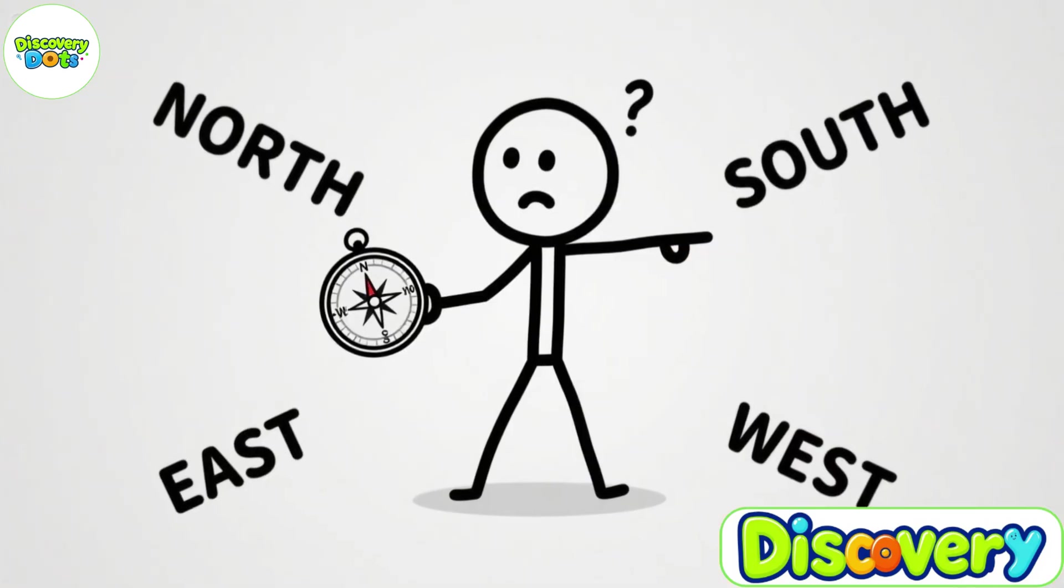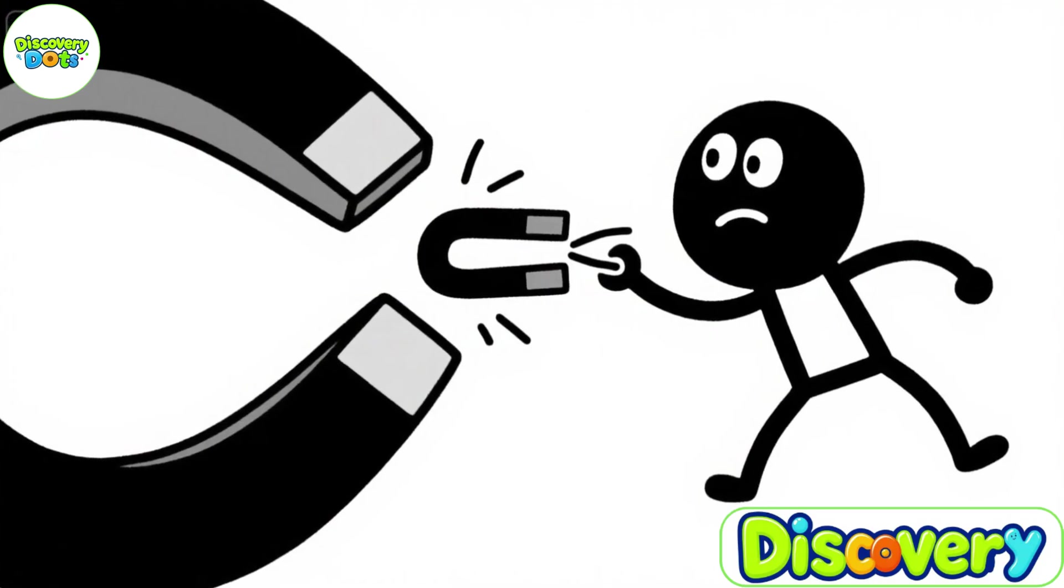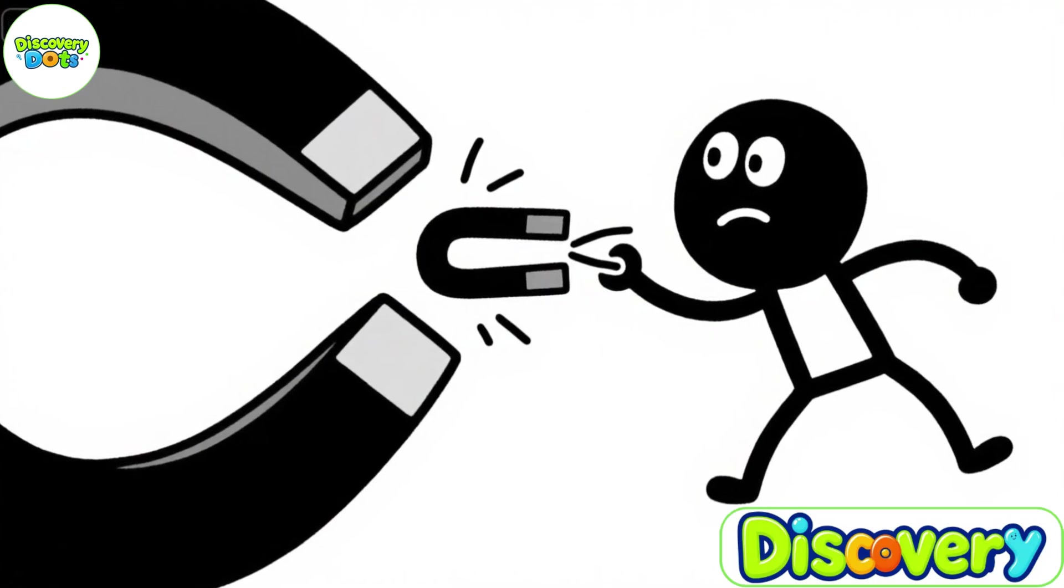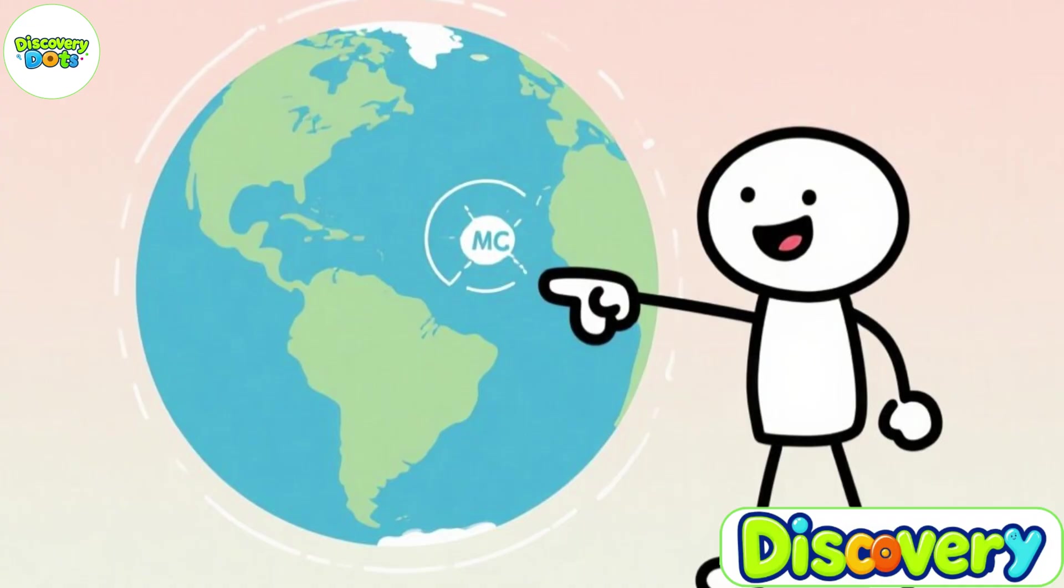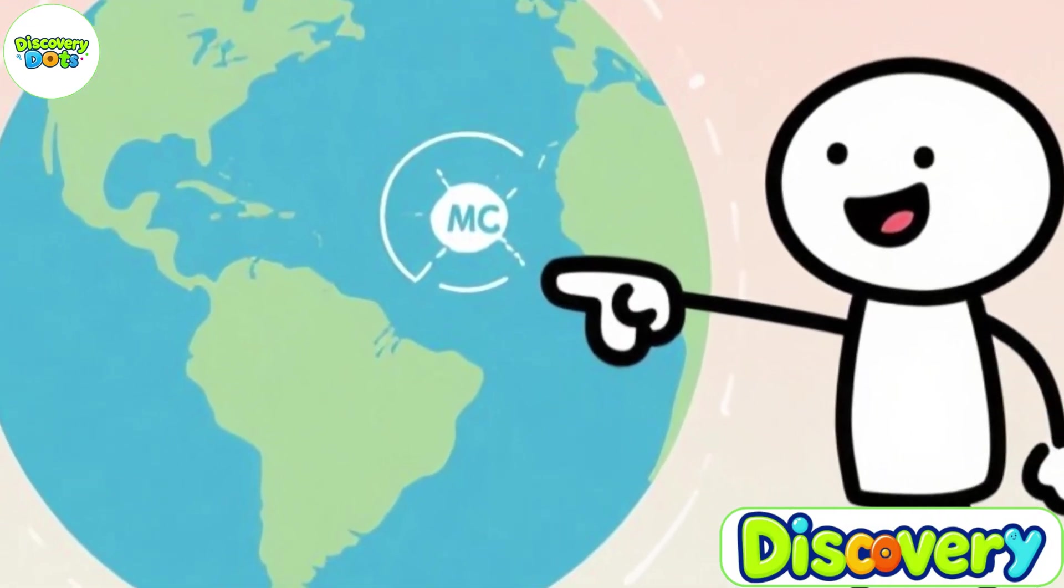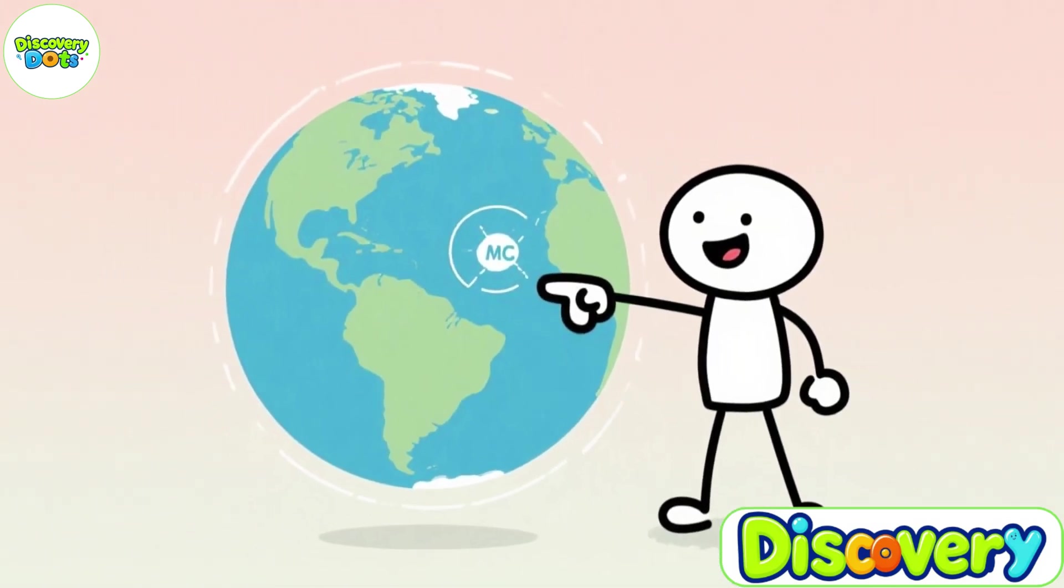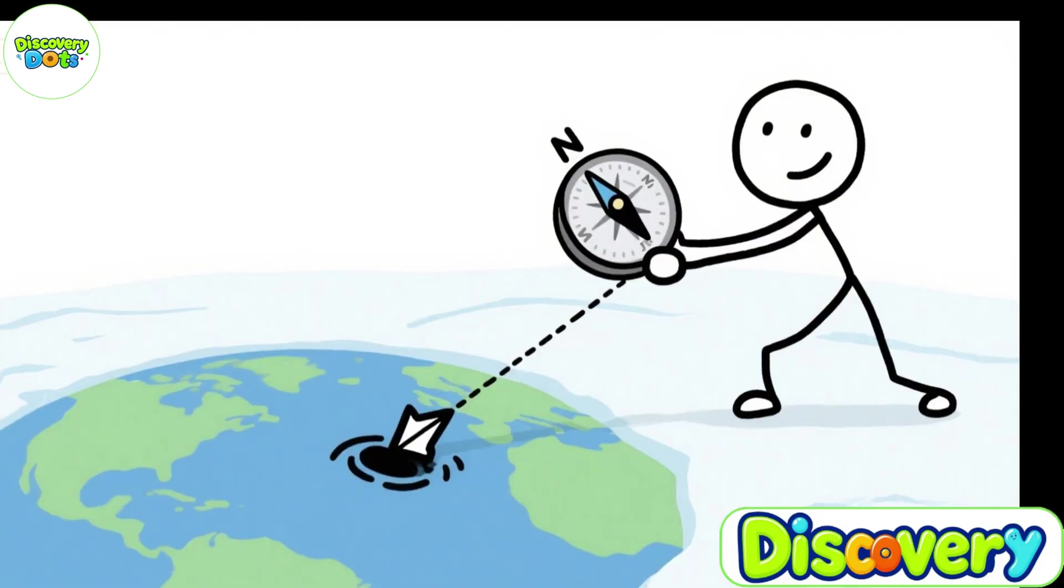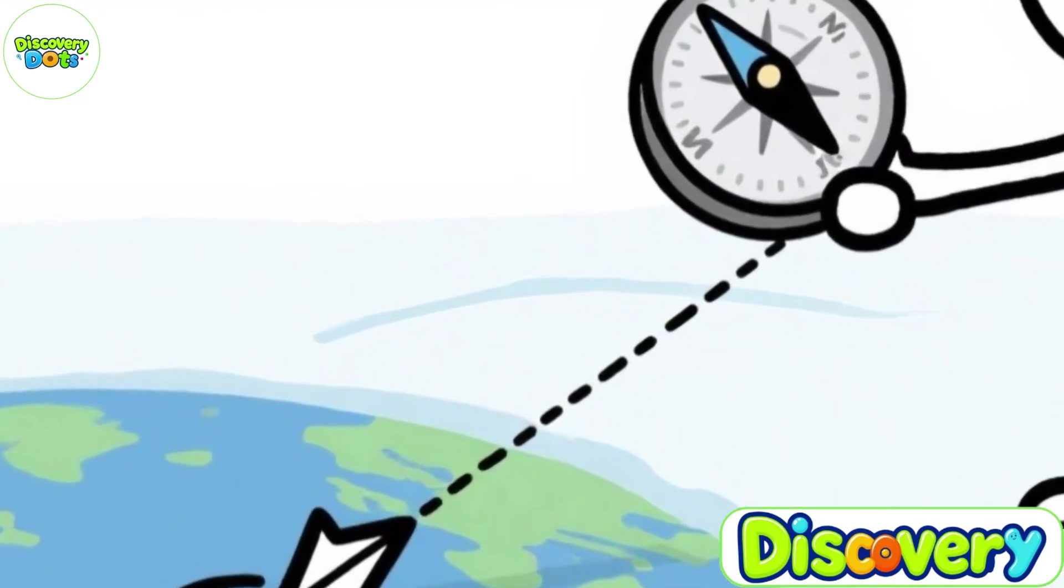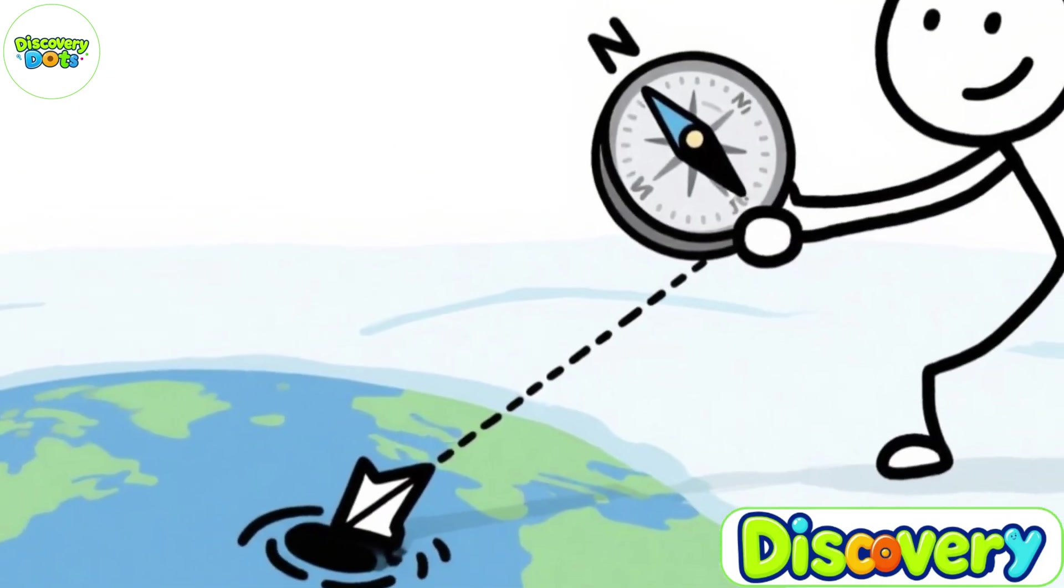So why does the compass needle point north and not somewhere else? When you place a small magnet near a larger magnet, the north pole of the small magnet is pulled toward the south pole of the larger magnet. Here's the interesting part: the geographic north pole of Earth, the place we call the north pole, is actually located near Earth's magnetic south pole. It sounds backwards, but this is a scientific convention. Because the end of the compass needle is called the north pole, it gets pulled toward Earth's magnetic south pole, which lies near the geographic north pole.